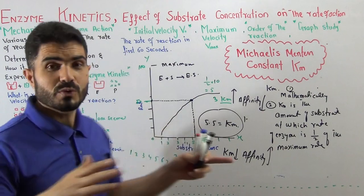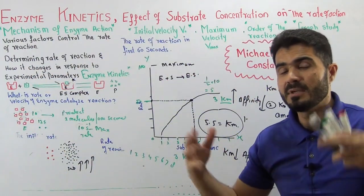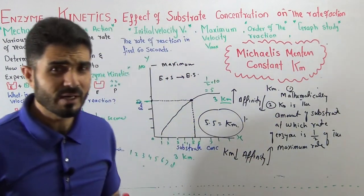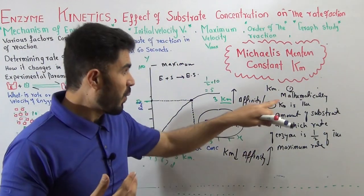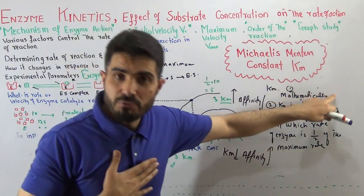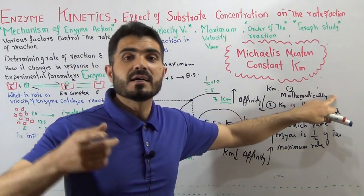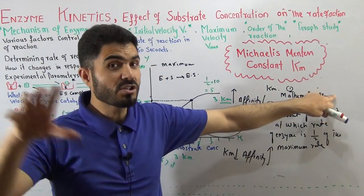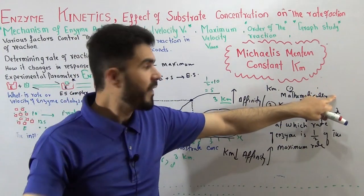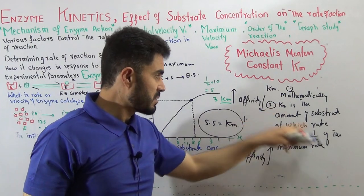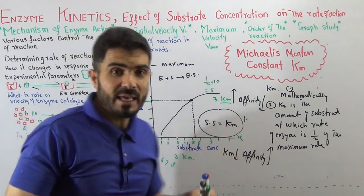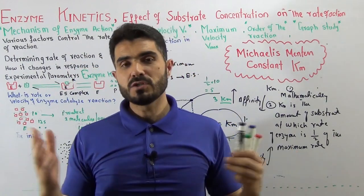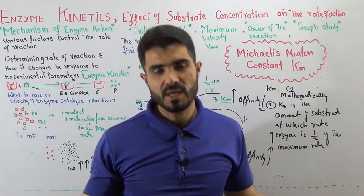So this video lecture was about the Michaelis-Menten constant. It has three definitions. Actually, in reality two - one is the mathematical that I will tell you in the topic of derivation of Michaelis-Menten equation. The second definition was discussed on the whiteboard - what is meant by Km and what is the importance of Km.